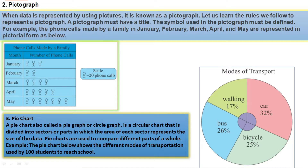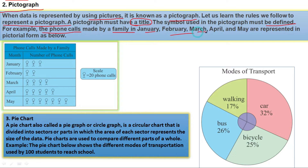Pictograph is also a smart chart. When data is represented by using pictures, it is known as a pictograph. Let us learn the rules we follow to represent a pictograph. A pictograph must have a title — without a title, we should not make any pictograph. The symbol used in a pictograph must be defined. For example, the phone calls made by a family in the months of January, February, March, April, and May are represented in a pictograph.